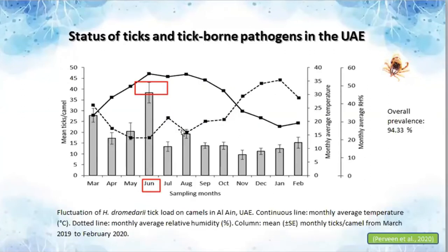In the population dynamics studies, we noticed the peak of ticks on camels in the month of June, and the minimum prevalence was seen in November. No significant correlation was found between tick population and temperature or humidity. The overall prevalence was 94%.